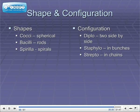To summarize: the shapes are cocci (spherical), bacilli (rods), and spirilla (spirals). Configurations can be diplo, meaning two side-by-side — diplococci or diplobacilli. Staphylococci hang out in bunches; streptococci hang out in chains. Those are always cocci — staphylococci and streptococci. There's no staphylobacilli and no streptobacilli; that just doesn't happen. Those terms only relate to cocci.